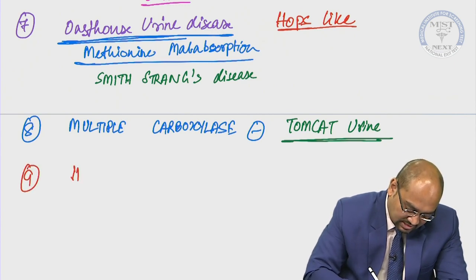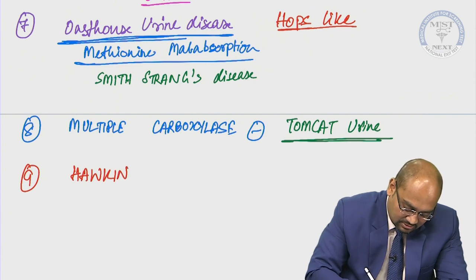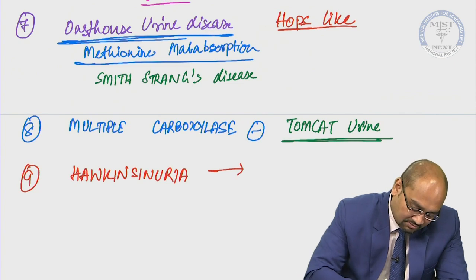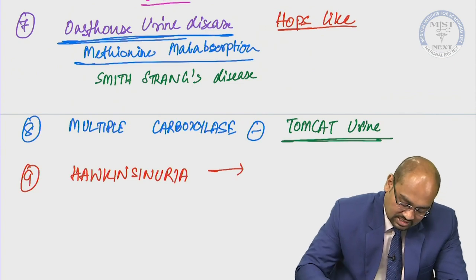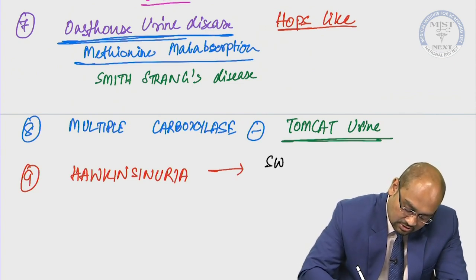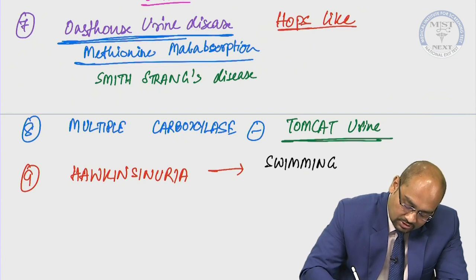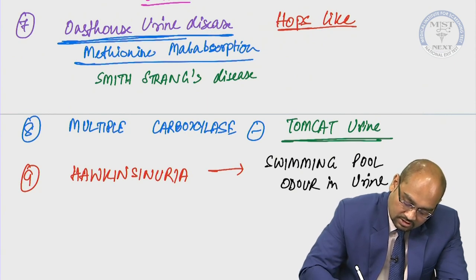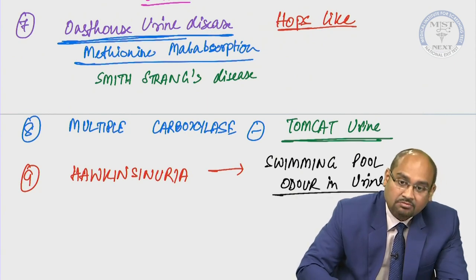The ninth one is Hawkinsinuria. In Hawkinsinuria, this is important — it has the classical swimming pool odor in urine. This is a very, very important question.